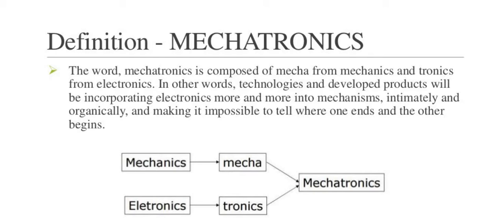Mechatronics is just the combination of different kinds of branches of engineering. It is not only electronics — electronics means there is also required information technology, computer systems, and artificial intelligence. These are the various kinds of things required for making any mechatronics products.